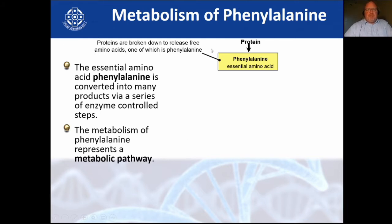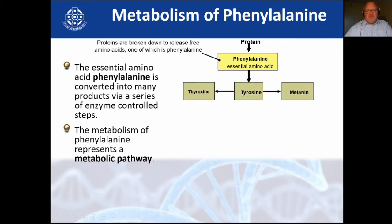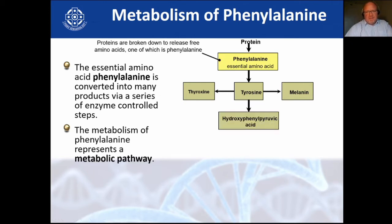Proteins are broken down and they release phenylalanine, which is an essential amino acid — we cannot make it, that's why it's called essential. It is then converted into tyrosine. Tyrosine is converted by an enzyme into thyroxine and melanin. So if you cannot produce melanin, you will be an albino. If this enzyme is broken, we will not have melanin and there will be too much tyrosine.